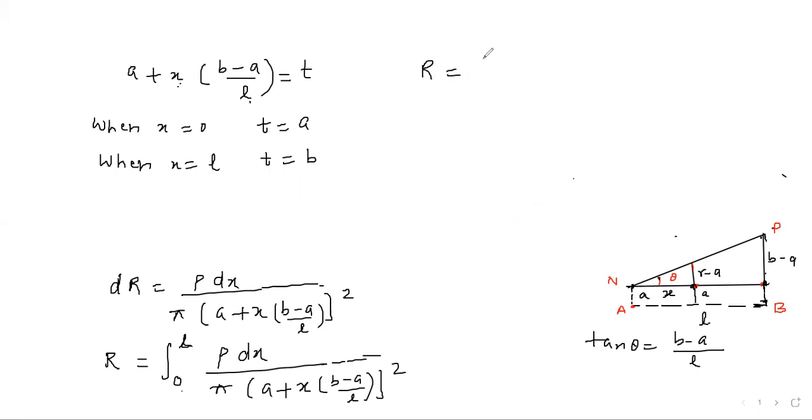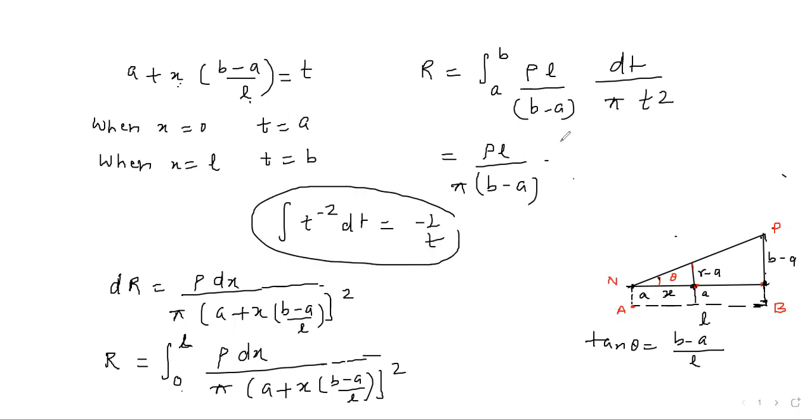Our integration becomes R equals limits a to b, ρl upon b minus a times dt upon π t². This is constant, so we can write it before integration. ρl upon π times b minus a times integration of t power minus 2, dt will be minus 1 upon t, limits a to b.